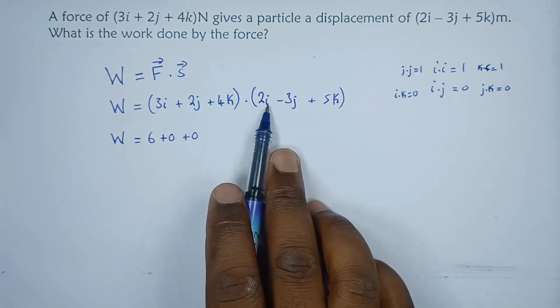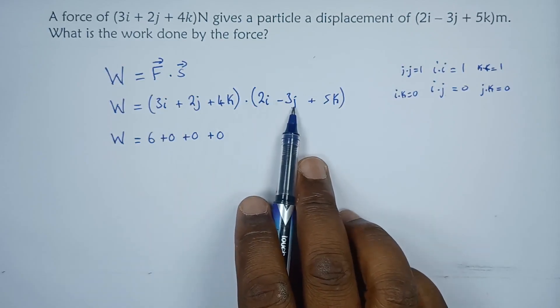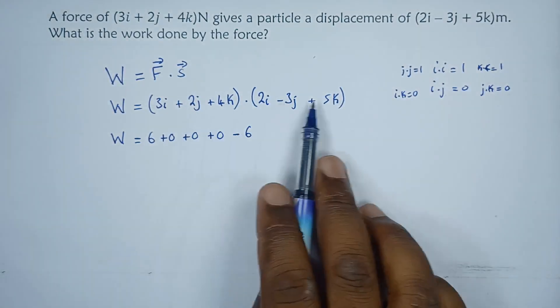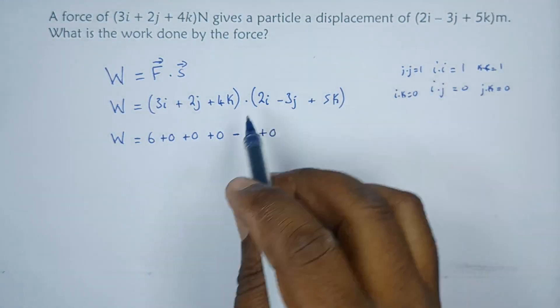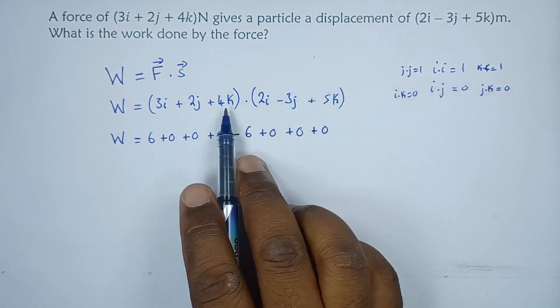This j times this i we get 0. 2j times negative 3j we get minus 6. Then j times k we get 0, k times i is 0, k times j is 0, and lastly 4k times 5k is just 20.